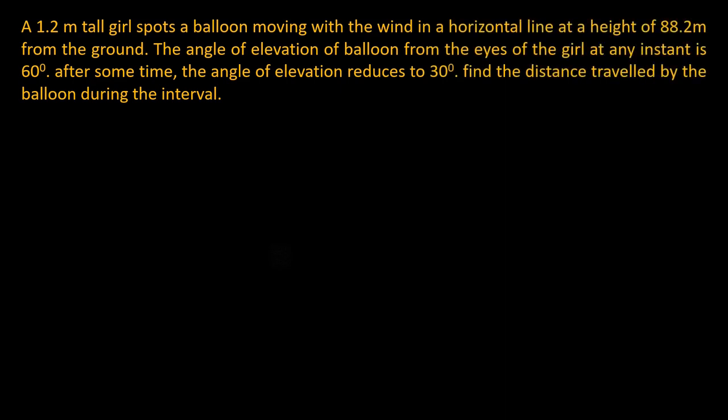A 1.2 meter tall girl spots a balloon moving with the wind in a horizontal line at a height of 88.2 meter from the ground. The angle of elevation of balloon from the eyes of the girl at any instant is 60 degree. After some time, the angle of elevation reduces to 30 degree. Find the distance traveled by the balloon during the interval.